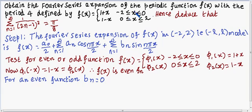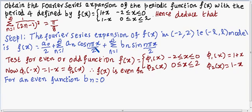The function is defined between two intervals: −2 < x < 0 and 0 < x < 2, so it is of the model (−l, l). The first step is to write the Fourier series expansion of f(x) on the interval (−2, 2). For the (−l, l) model, the Fourier series is: a₀/2 + σ aₙ cos(nπx/2) + σ bₙ sin(nπx/2).